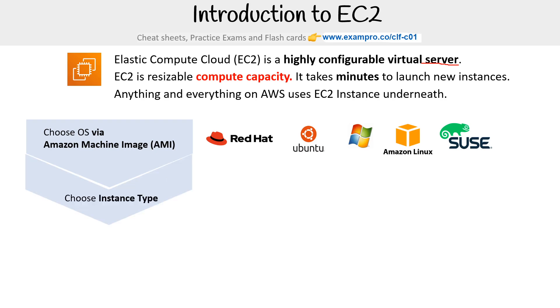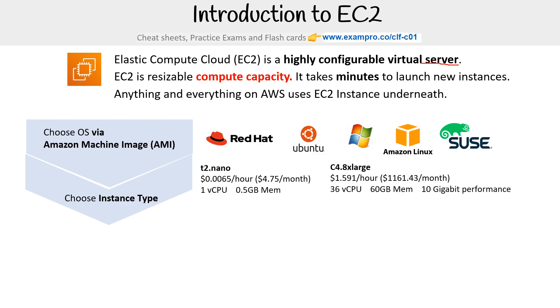Then you choose your instance type, which is going to determine things like your vCPUs and your memory. Here you can see how many there are, and you'll have a monthly cost — that's the name of the instance type.